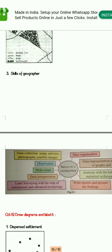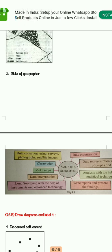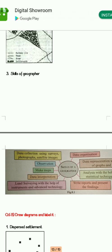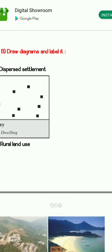Next is skills of geographer. This diagram is already present in your textbook — I have taken it directly from the textbook. You need to draw it well and label it properly, including: data organization, observation, making of maps, data interpretation, writing the reports, and presenting the findings.